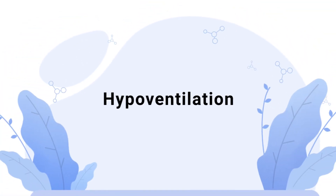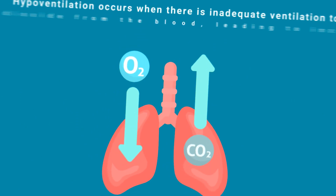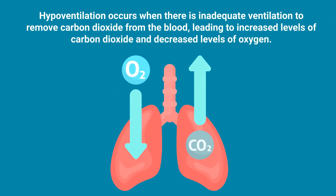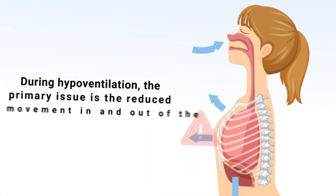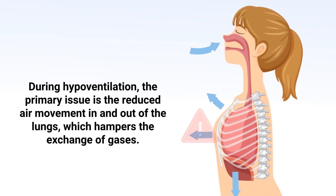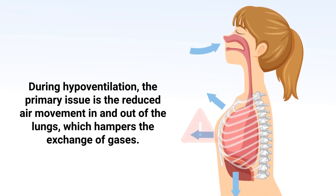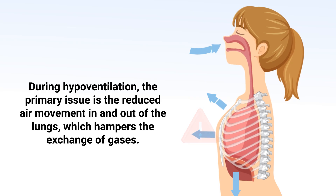First on our list is hypoventilation. Hypoventilation occurs when there is inadequate ventilation to remove carbon dioxide from the blood, leading to increased levels of carbon dioxide and decreased levels of oxygen. This condition can result from a variety of factors, including respiratory muscle weakness, chest wall deformities, or central nervous system depression due to drugs or neurological disorders. During hypoventilation, the primary issue is the reduced air movement in and out of the lungs, which hampers the exchange of gases.